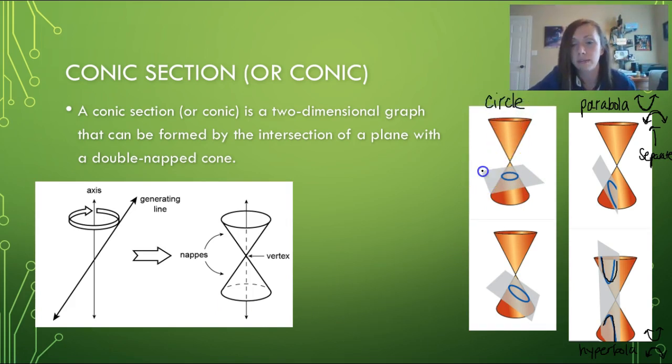It is going to be a circle if your plane is parallel to the base of the cone, or in other words is perpendicular to the axis. The axis goes through the center, so if the axis and the plane make a 90 degree angle, then you will have a circle.